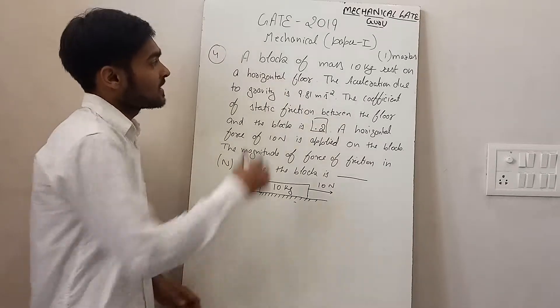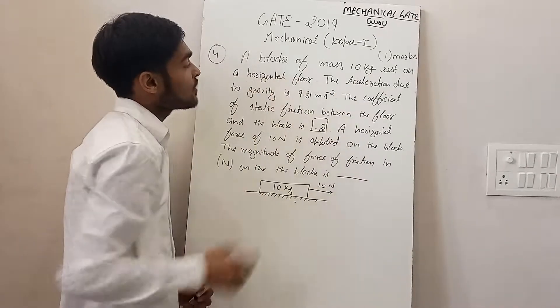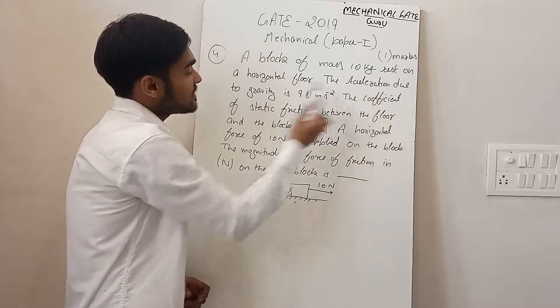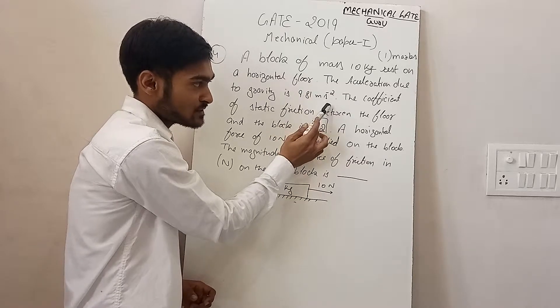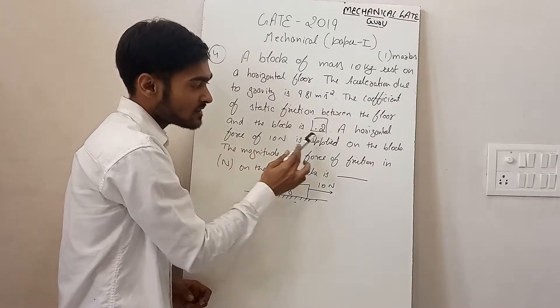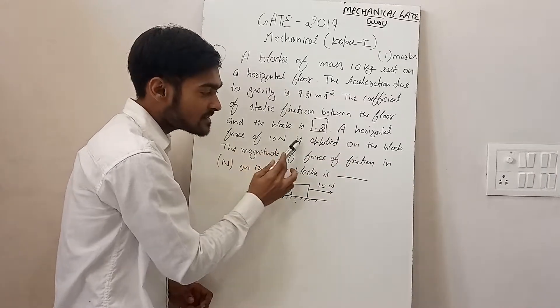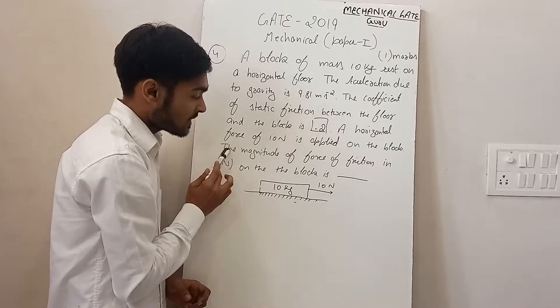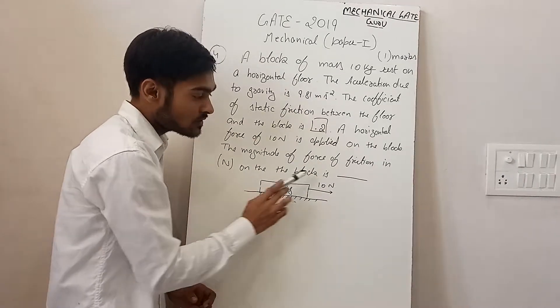Now, fourth question. A block of mass 10 kg rests on a horizontal floor. The acceleration due to gravity is 9.81 m per second square. The coefficient of static friction between the floor and the block is 0.2. A horizontal force of 10 N is applied on the block. The magnitude of force of friction in N on the block is?